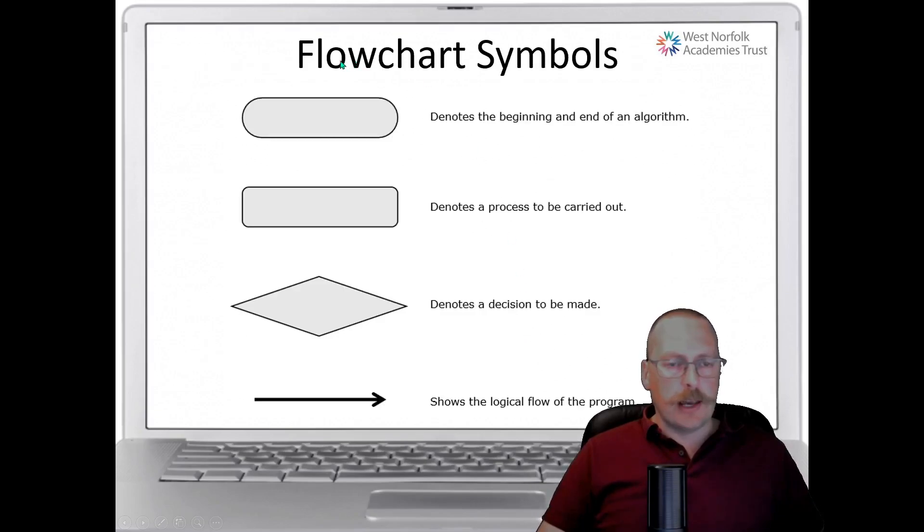Let's just now have a look at the flowchart symbols. So these are the ones we use. Here's the terminus, the oval. Here's the process, the procedure taking place. Here's our if decision. And here is our direction of flow. So you do need to get used to these flowchart symbols.